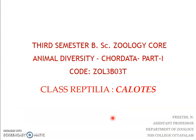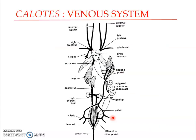Welcome back to this session on Calatis versicolor. In this presentation we will be dealing with the venous system of Calatis. The venous system includes the veins which carry deoxygenated blood from various parts of the body. This blood is brought into the sinus venosus through three main caval veins: the right pre-caval vein, the left pre-caval vein, and the post-caval vein. These three veins carry blood to the sinus venosus and from there to the heart.